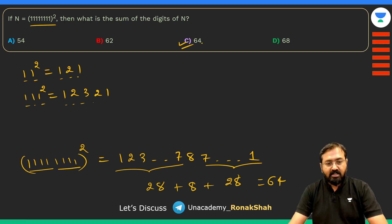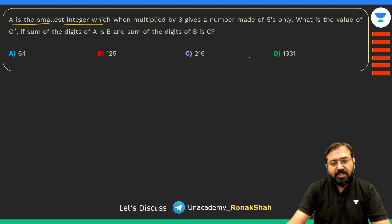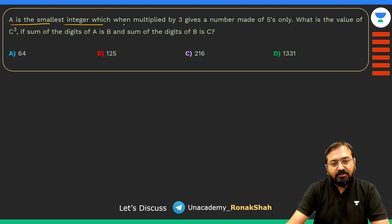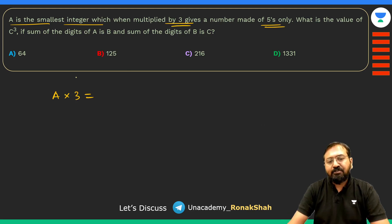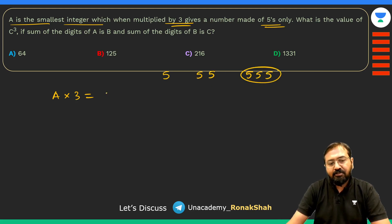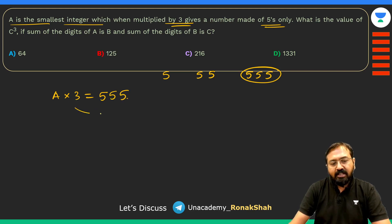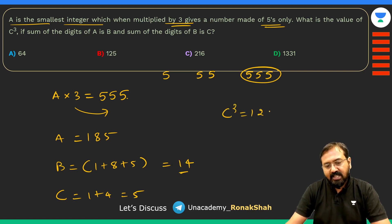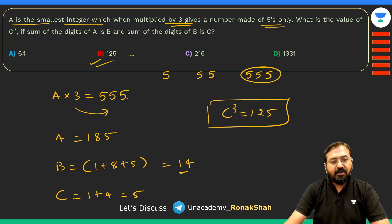A is the smallest integer which when multiplied by 3 gives a number made of only fives. The number 555 is a multiple of 3, and 555 ÷ 3 = 185. So A = 185. B is the sum of digits of A: 1+8+5 = 14. C is the digit sum of B: 1+4 = 5. C cubed is 5³ = 125. That is the final answer: 125.